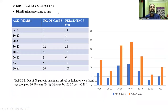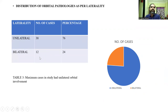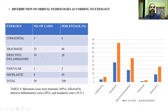Observations and results include the distribution of patients according to age. Maximum lesions were found in the age group of 30 to 40 years, followed by 20 to 30 years. Out of these, 37 were males and 13 were females. 38 patients showed unilateral lesions and 12 showed bilateral lesions. Distribution of orbital pathologies according to etiology shows 3 congenital, 23 traumatic, 14 infective inflammatory, 1 vascular, and 9 neoplastic.